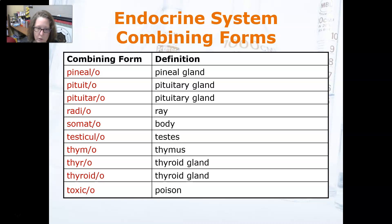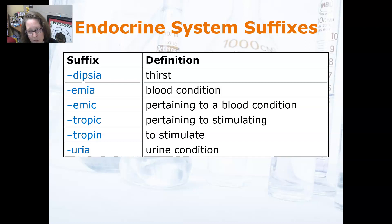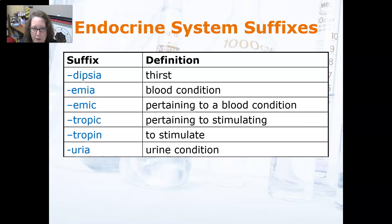Toxico is poison. Now for some suffixes: dipsia is thirst, so polydipsia is a lot of thirst — it's a sign and symptom of diabetes. Emia is a blood condition, and emic is pertaining to a blood condition. Tropic is pertaining to stimulating, and tropin is to stimulate. Urea is a urine condition, so glycosuria is glucose in the urine.